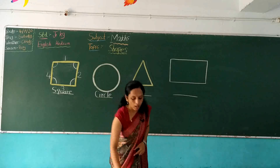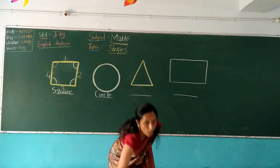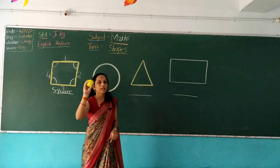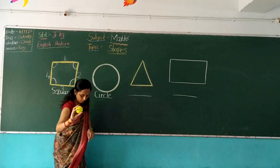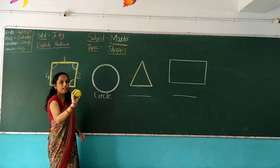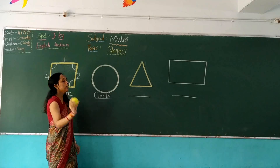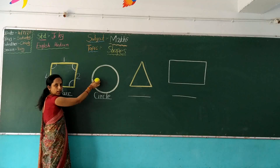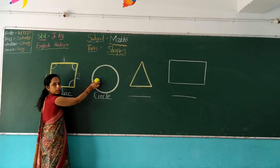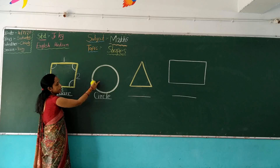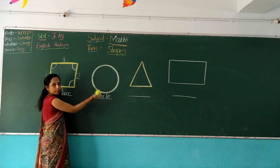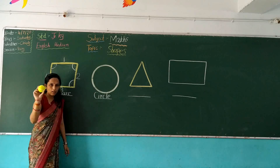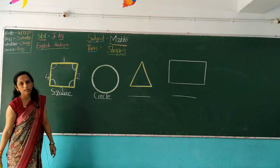It is like a wall clock. Which shape? Wall clock is circle shape. This is a circle shape.